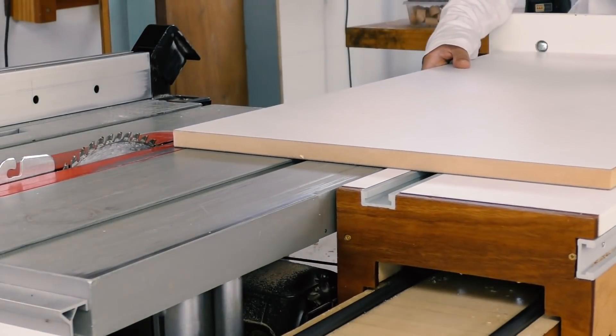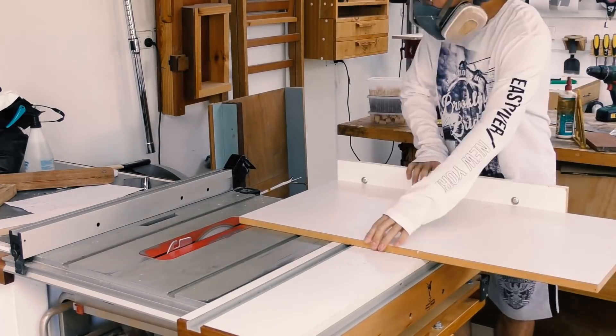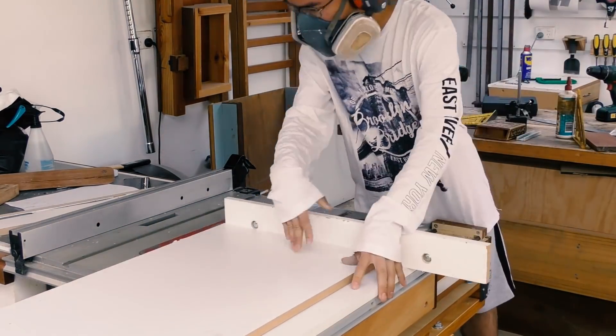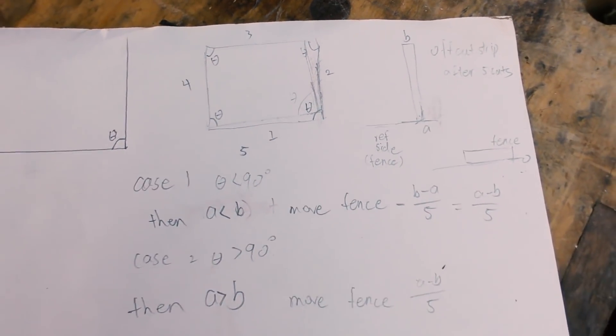Now the five cut method, which I am sure most of you will be very familiar with, basically provides an indication of how square your miter fence is by magnifying any error present five times. To help me with identifying which way to move the fence, I drew a little diagram.